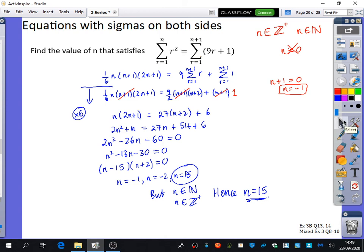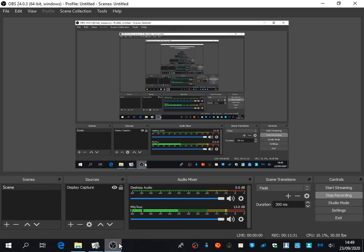So the things that use these kind of skills, where there's going to be a sigma on both sides, question 13 and question 14 from exercise 3b, and from the mixed exercise, which is just all sorts of questions from this chapter, questions 8, 9, and 10 all use that as well. So we're going to do some, we've only got about 10 minutes, but we'll do maybe just question 13 for now.